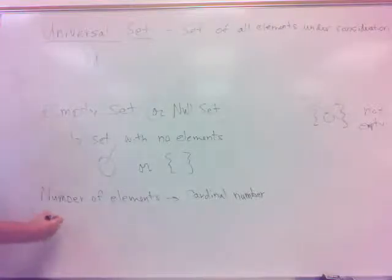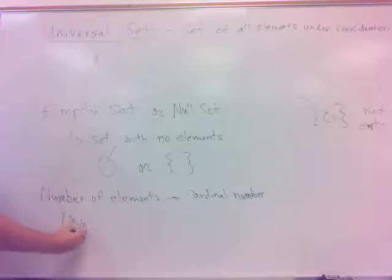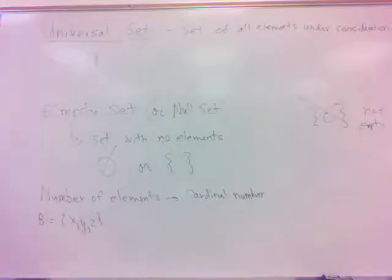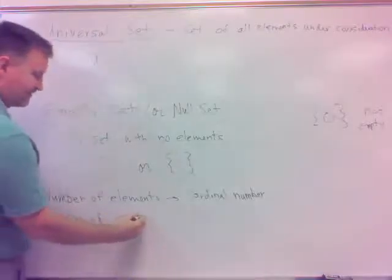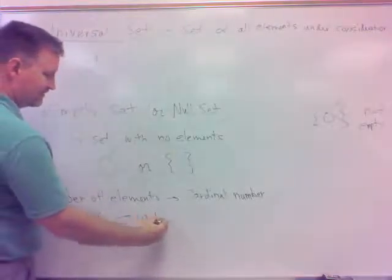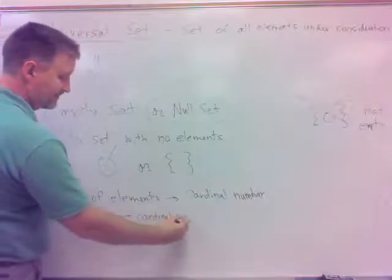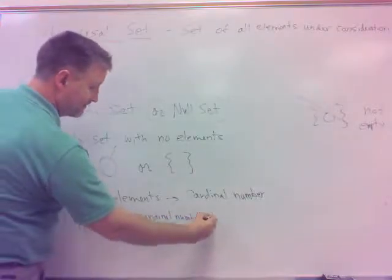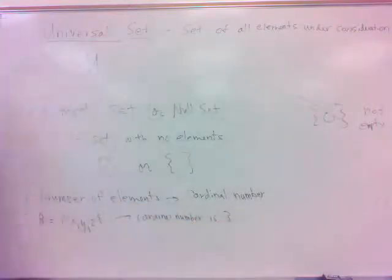If I had the set XYZ, that was my set B, right? What's the cardinal number of that set? It would be three, right? Three elements. So that's the cardinal number. That's all it is. But the cardinal number just signifies the number of elements in the set.